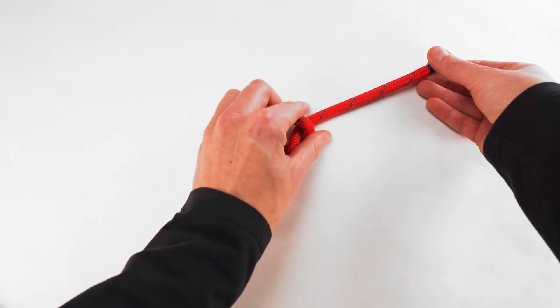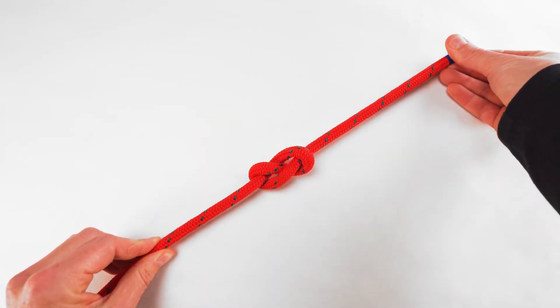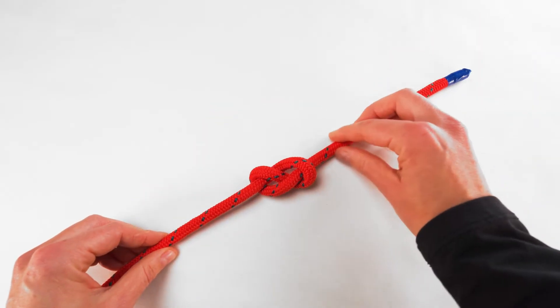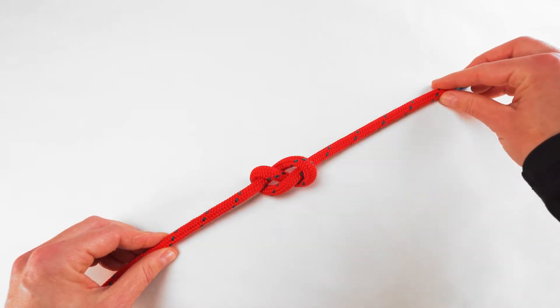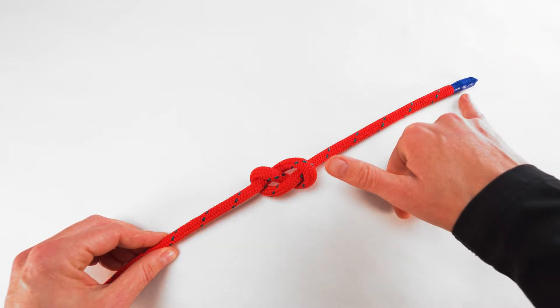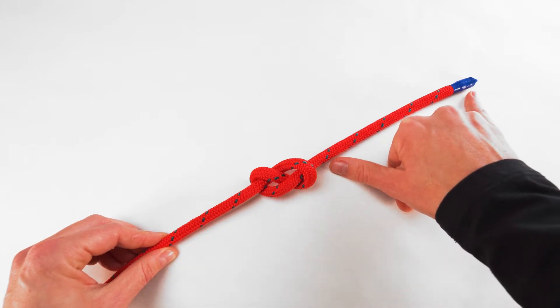As you pull tighter you will see the figure eight shape. Make sure to have at least six inches of tail. You can estimate this with the space between your thumb and pinky finger.